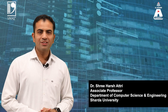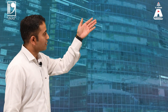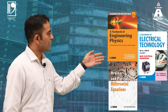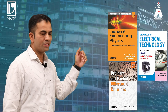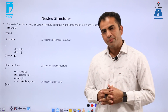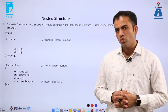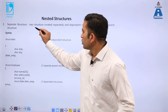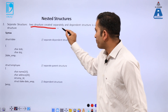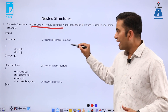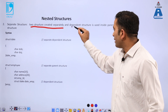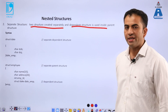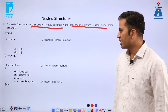I am Dr. Srirash Atri and these are the good engineering books from the Aesthan Publishing. In a separate structure, two structures are created separately and the dependent structure is used inside the parent structure.